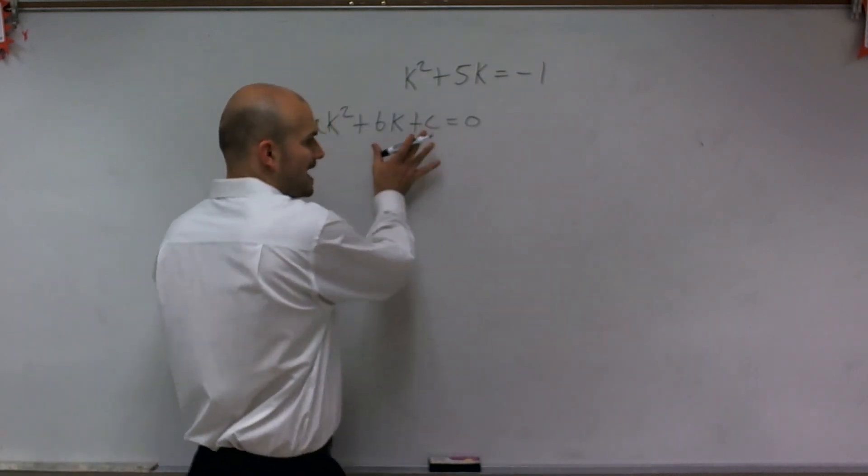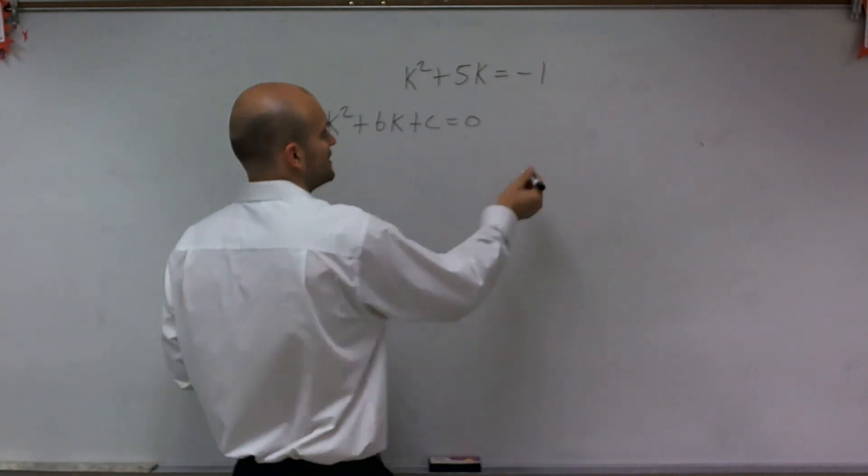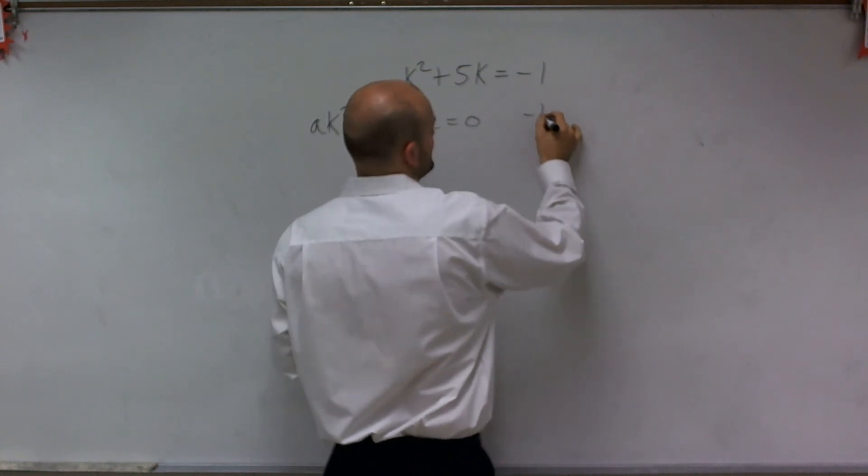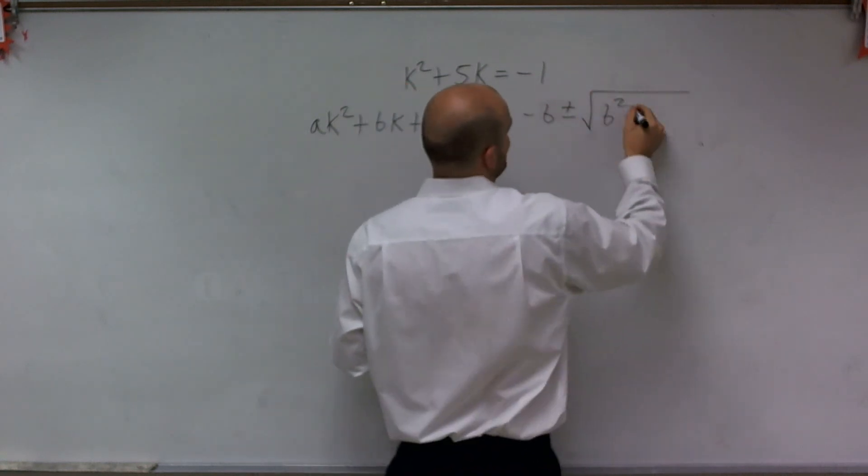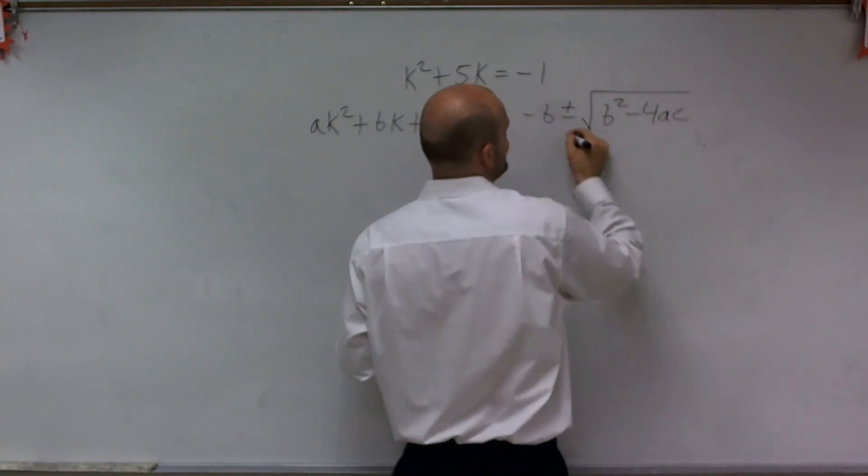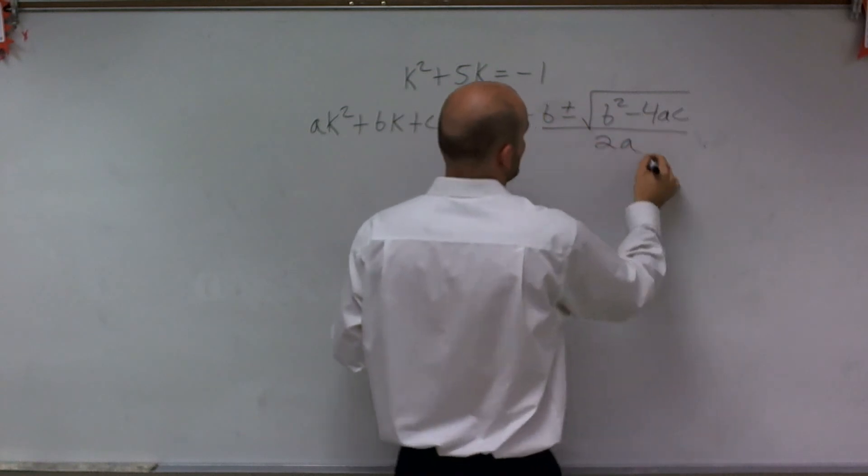Then once we have something in this format, we can use the quadratic formula which states opposite of b plus or minus the square root of b squared minus 4 times a times c all over 2a.